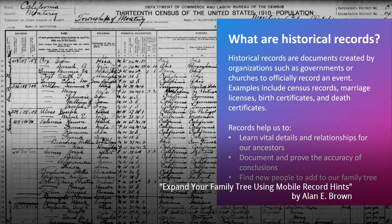Historical records are documents created by organizations such as governments or churches to officially record an event. Examples include census records, marriage licenses, birth certificates, and death certificates. Records help us to learn vital details and relationships for our ancestors, document and improve the accuracy of conclusions, and find new people to add to our Family Tree.